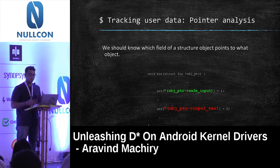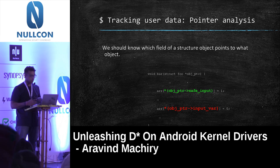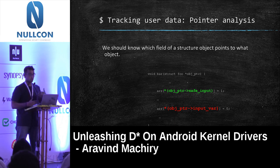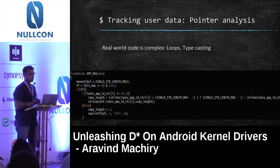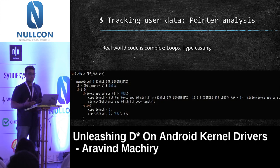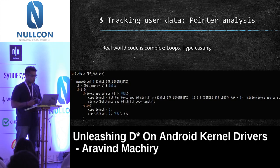We should also be able to differentiate between different fields of a structure. Here, only the input_bar member is affected by user input, not safe_input. If we don't differentiate between these two members, we get a lot of false positives and the tool becomes useless. We also need to handle real-world code complexity — it has loops, typecasting between structures and void pointers, which can blow up the system.